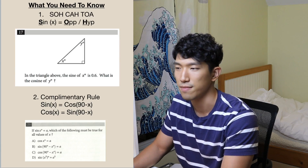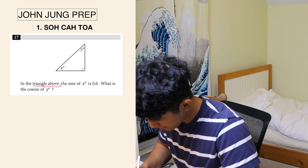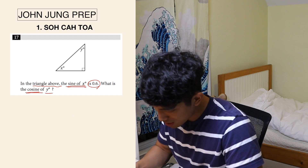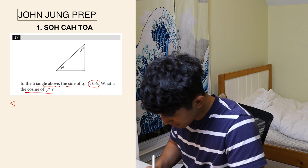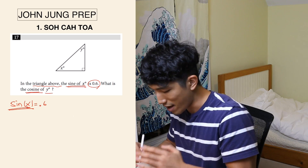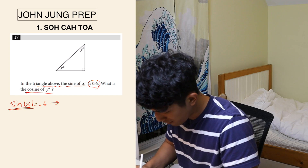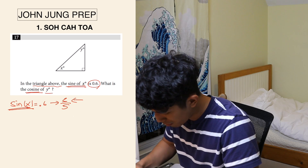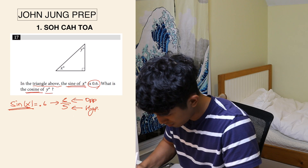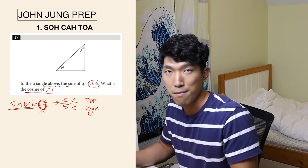So let's look at the first question — SOHCAHTOA. It says the triangle above has the sine of x equal to 0.6, and the question asks what the cosine of y is going to be. Whenever you see a trig question where sine of x is equal to a decimal instead of a fraction, always change it to a fraction. 0.6 becomes 3 over 5. If it's in decimal form, there's no way to find the exact length, which makes the question that much more difficult.